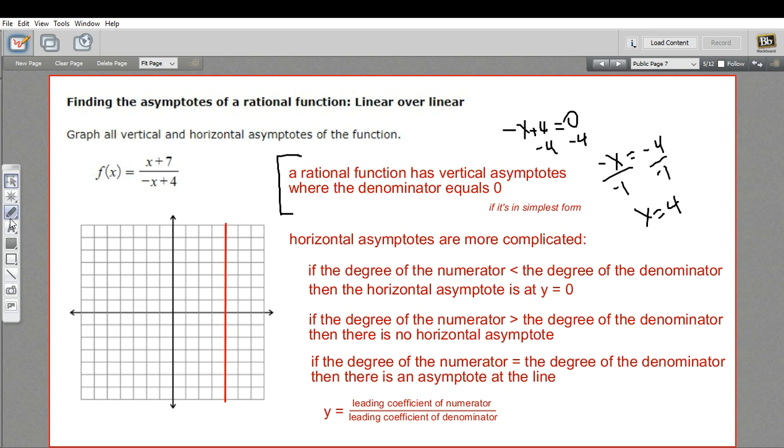Well, the leading term is the term with the highest power. On the numerator, that's just x. On the denominator, that's just negative x. So the coefficients there are 1 and negative 1. So our line is at y equals 1 over negative 1. And 1 divided by negative 1 is just negative 1. So y equals negative 1 is the line of our horizontal asymptote. So we'll draw that in.